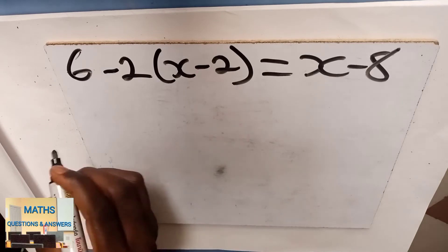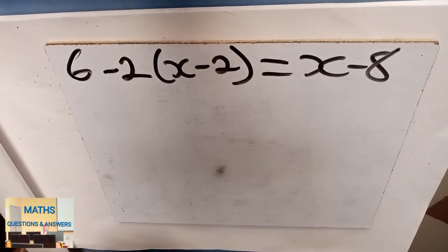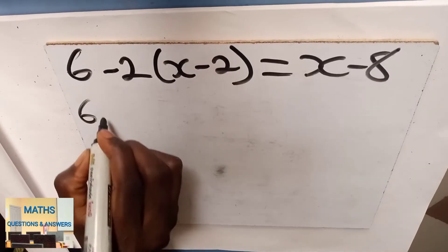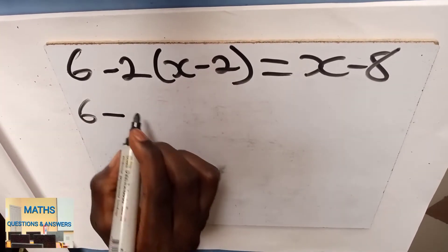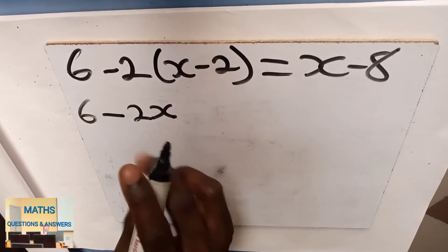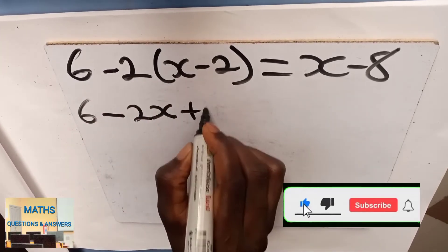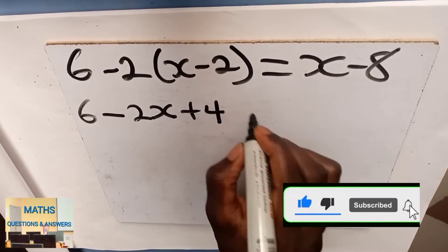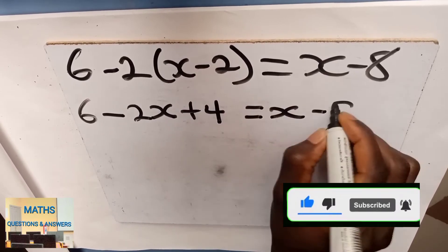You have to expand the bracket. So while expanding, you write those which are not having brackets. So we have 6 minus 2 multiplying x gives negative 2x. So negative 2 multiplying negative 2 gives positive 4 equal to x minus 8.